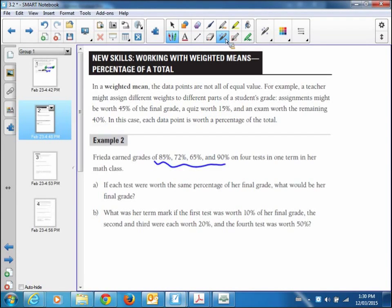Freda earned grades of 85, 72, 65, and 90 on four tests in one term in her math class. If each test is worth the same, what would be your final grade? Easy enough. You add those test marks up: 85 plus 72 plus 65 plus 90. That's 312. And divide by the four. That's going to give you a 78% average.